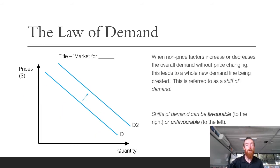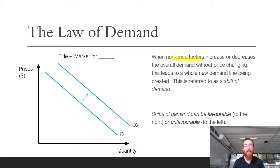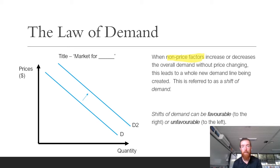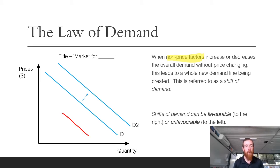Movements along the demand curve occur when selling price changes. Shifts of demand are different — they occur whenever non-price factors change, either increasing or decreasing overall demand without the price changing. This leads to a whole new demand line being created. Shifts can be favourable, moving to the right, or unfavourable, moving to the left.